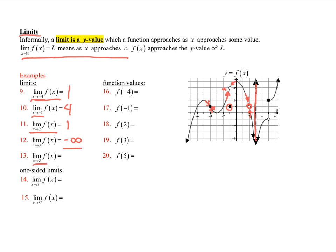For the limit as x approaches 5 — am I driving to the same place from the right and the left? No. From the left I'm driving towards 2, and from the right I'm driving towards negative 1. So we say that this limit does not exist.